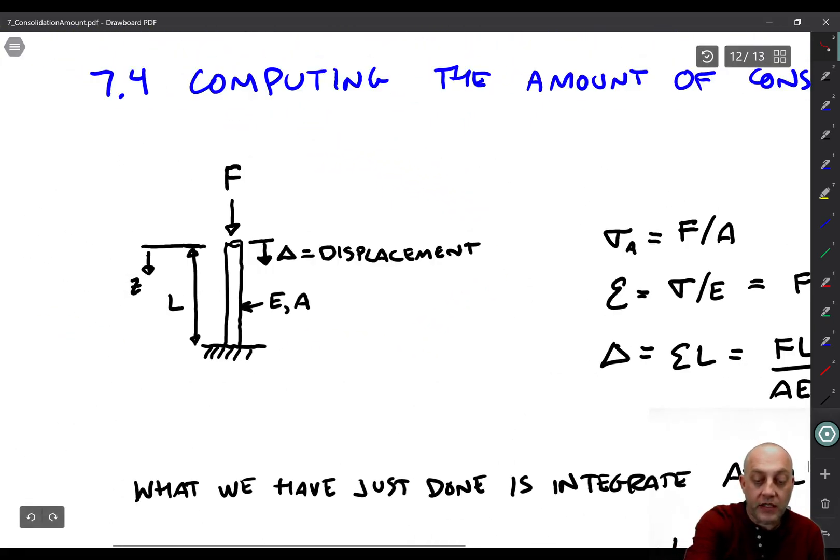There's some force acting on it, F. It has length L. Depth is measured from the top of the bar downward, that's Z. And then displacement is delta. So if you put the load on the bar, it will have some vertical displacement. Then the Young's modulus and cross-sectional area are E and A.